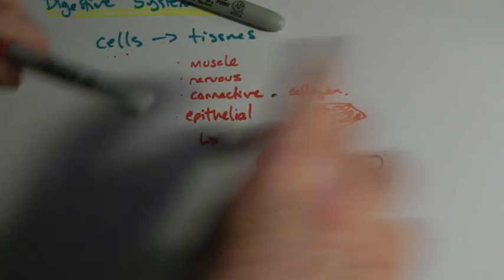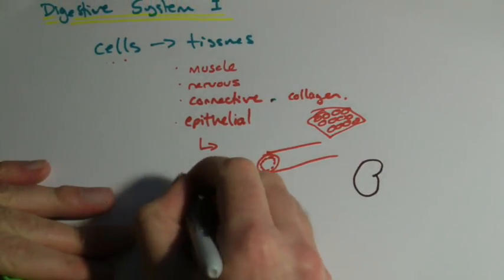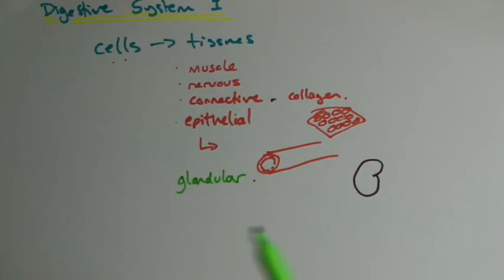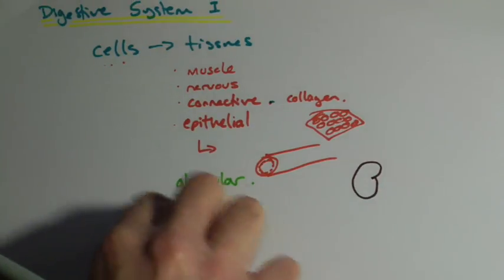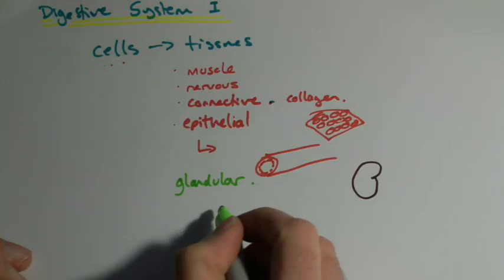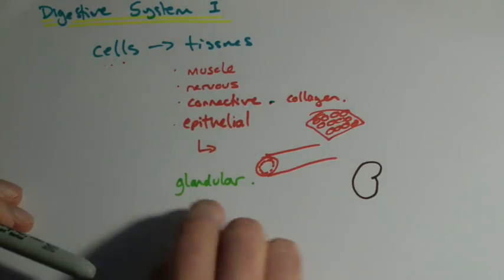Now actually in the book, it makes a point of another type of tissue, which it calls glandular tissue. Now a gland is just something that produces a liquid. So for example, your saliva glands in your mouth produce saliva and they're secreted into your mouth.